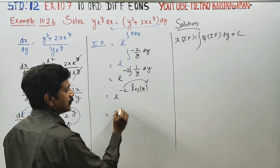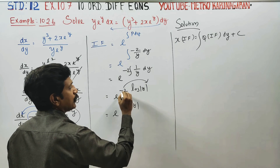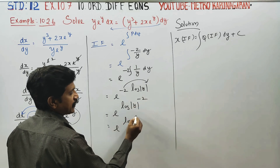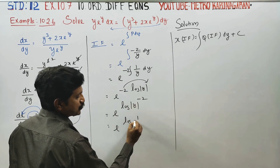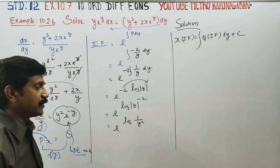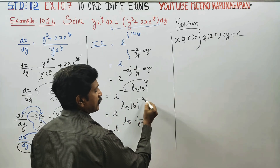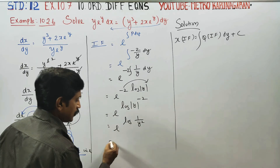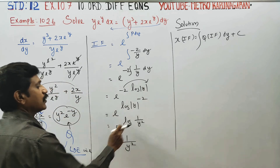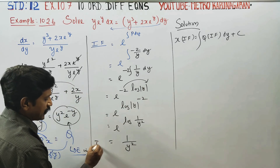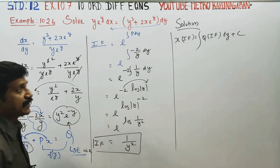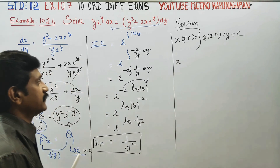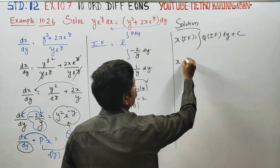Integrating Factor = e^(log y^(-2)) = e^(log(1/y²)). The e and log cancel, giving Integrating Factor = 1/y².